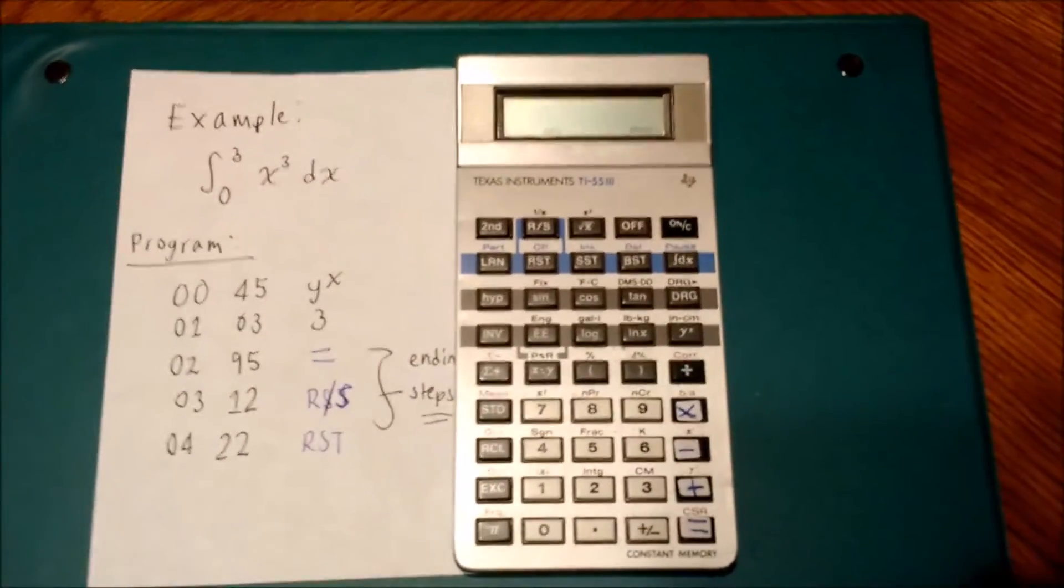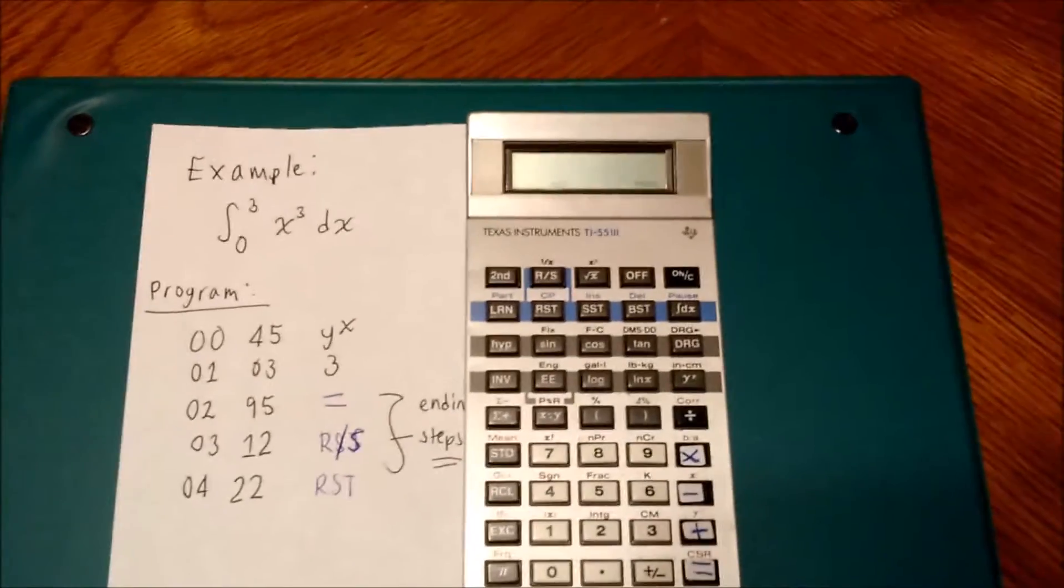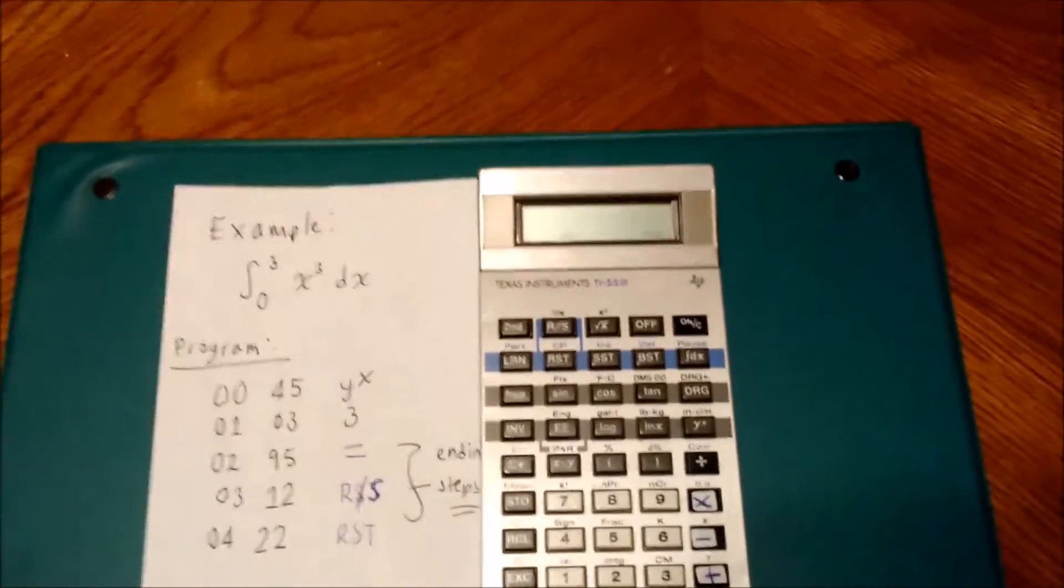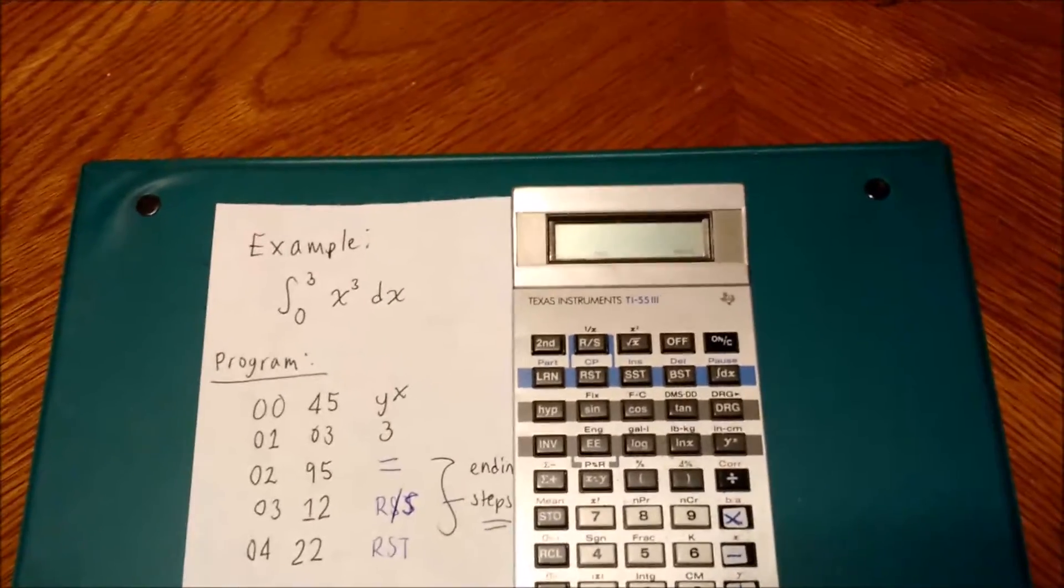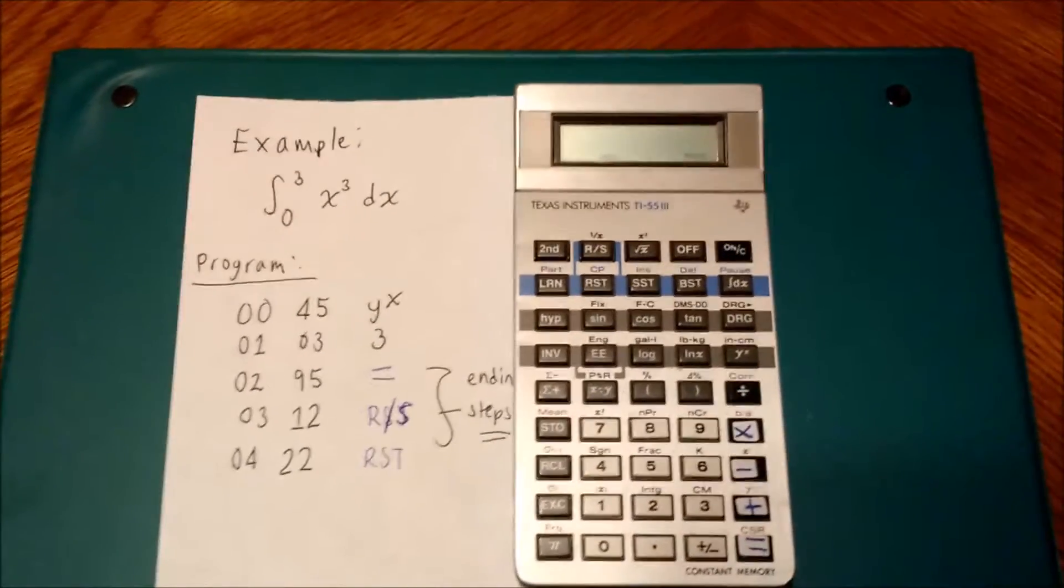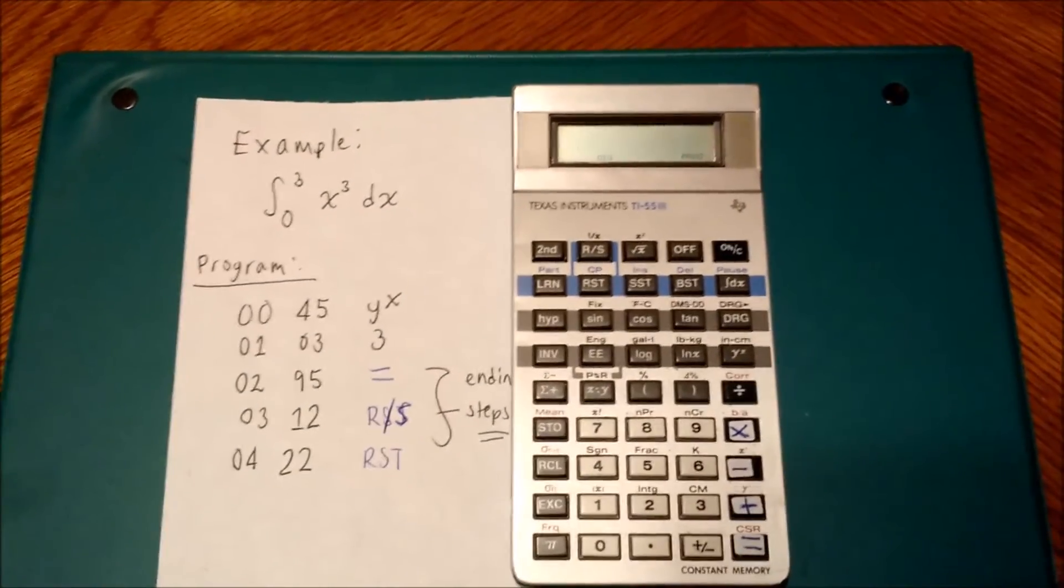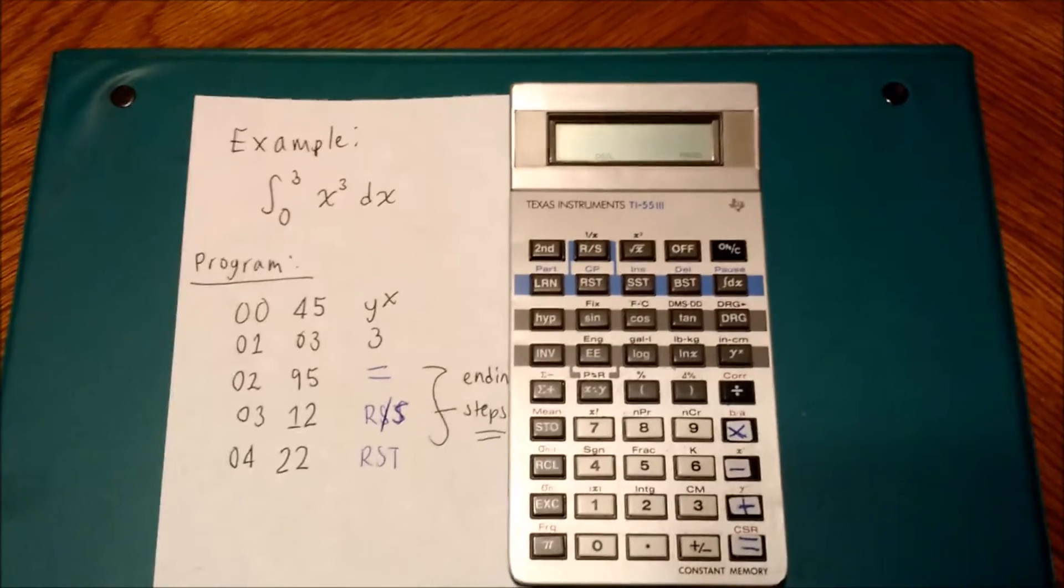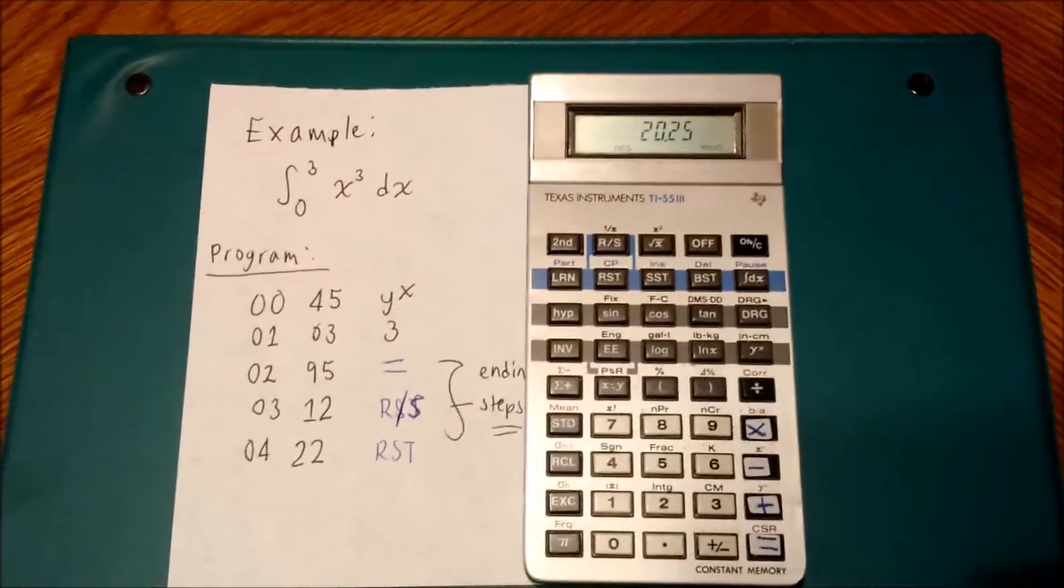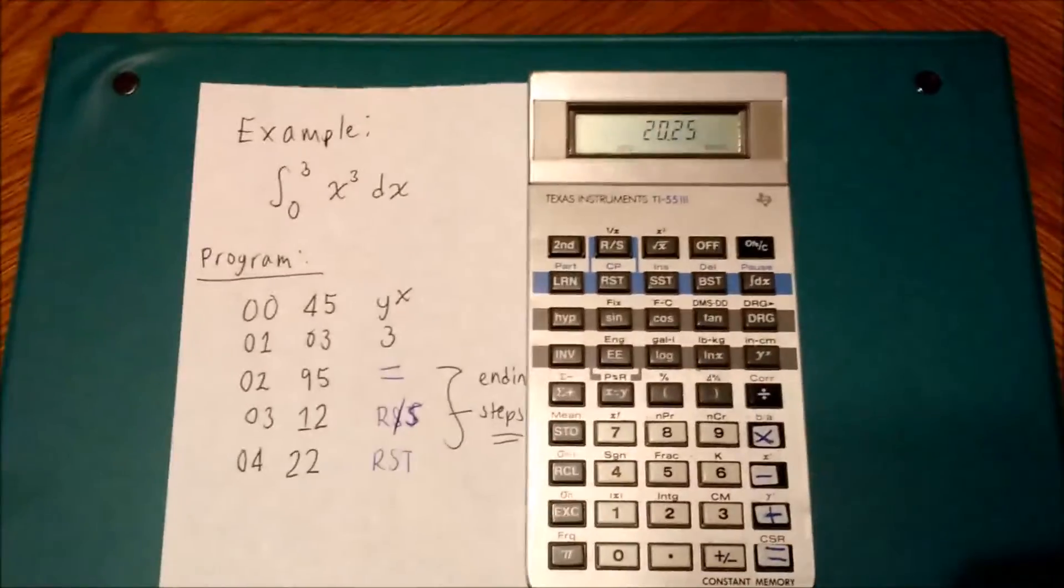It's going to take some time for the calculator to process the integral. Back in the 80s, integrals did take time. It's not instant as we have now. So you're seeing the TI-55-3 working its calculations. And it's still integrating. And now the TI-55-3 stopped integrating, and we have our answer: 20.25.